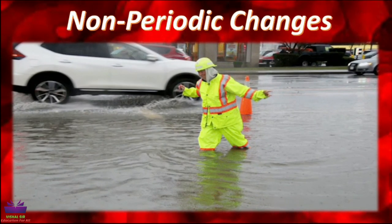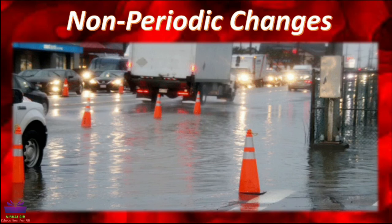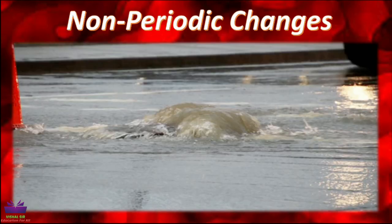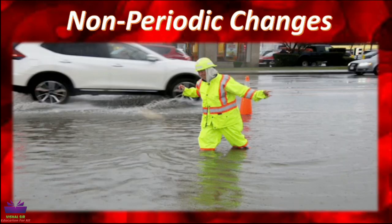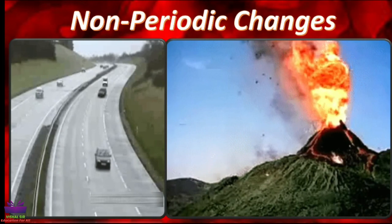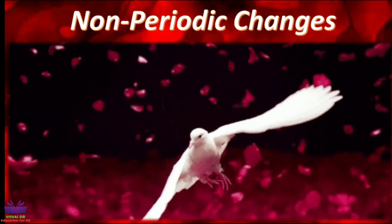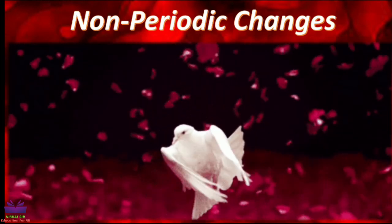Now let us check the examples of non-periodic changes. Floods that take place during the rainy season are non-periodic changes, because they don't occur after a certain interval of time. Earthquakes and volcanoes are also examples of non-periodic changes. Similarly, a bird sitting on a tree and flying away is an example of a non-periodic change.